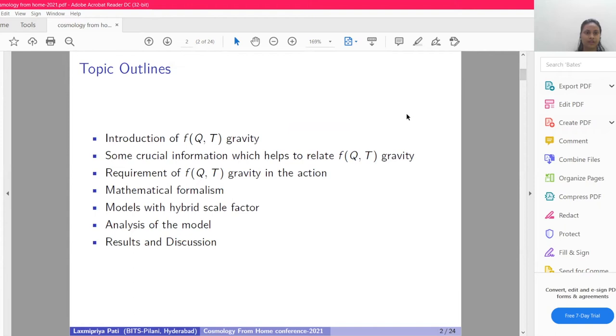In my outline of presentation, I include these points. First, I will explain introduction of f(Q,T) gravity. Then some important information that will help to relate in f(Q,T) gravity, the requirement of f(Q,T) gravity in the action formula, then mathematical formalism, models by taking the hybrid scale factor, analysis of the model, and finally results and discussion.